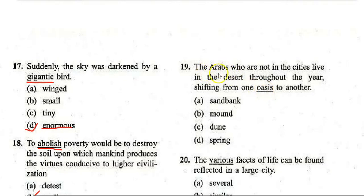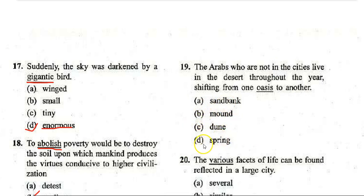Next: 'The Arabs who are not in the cities live in the desert throughout the year, shifting from one oasis to another.' Options: A. Sandbag, B. Moon, C. June, D. Spring. The correct answer is D — 'spring.' 'Oasis' and 'spring' are related in meaning.